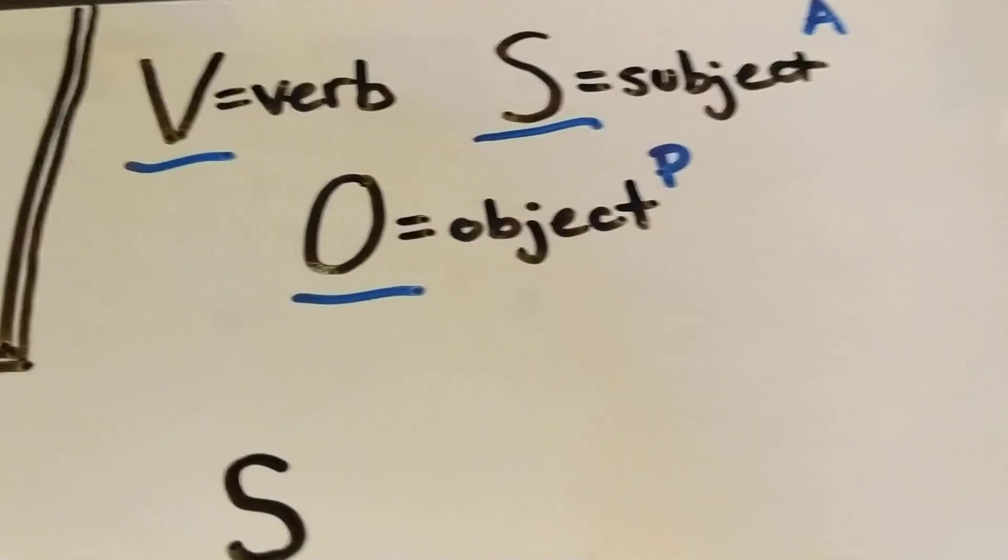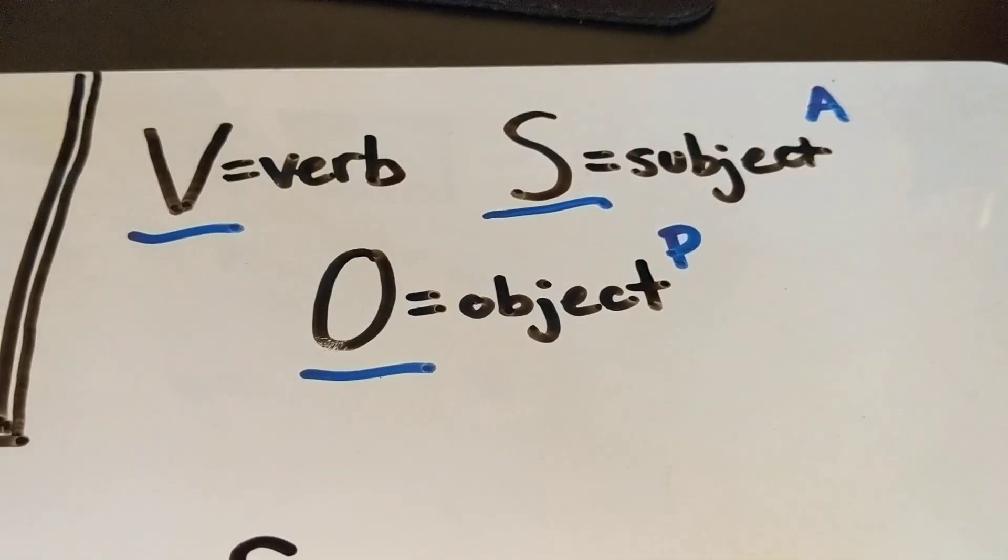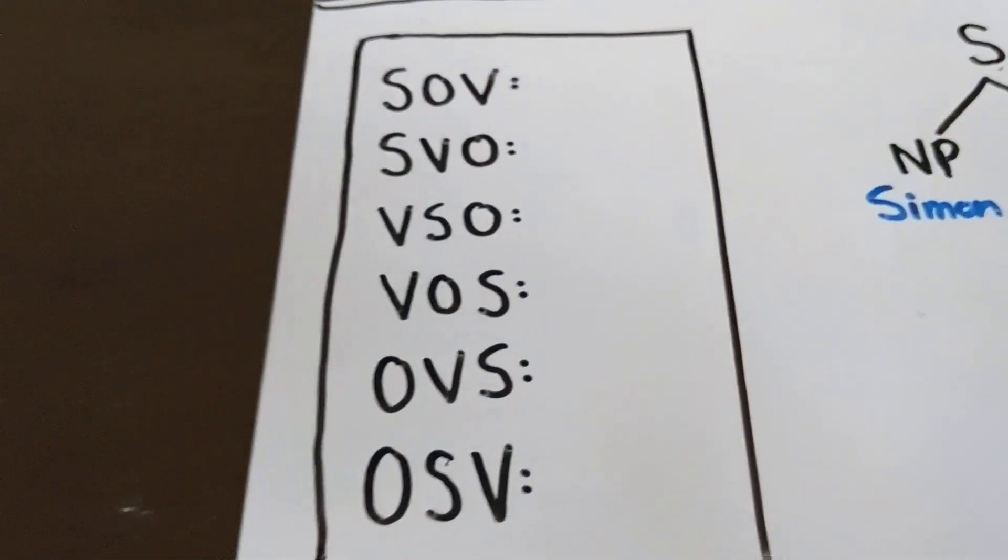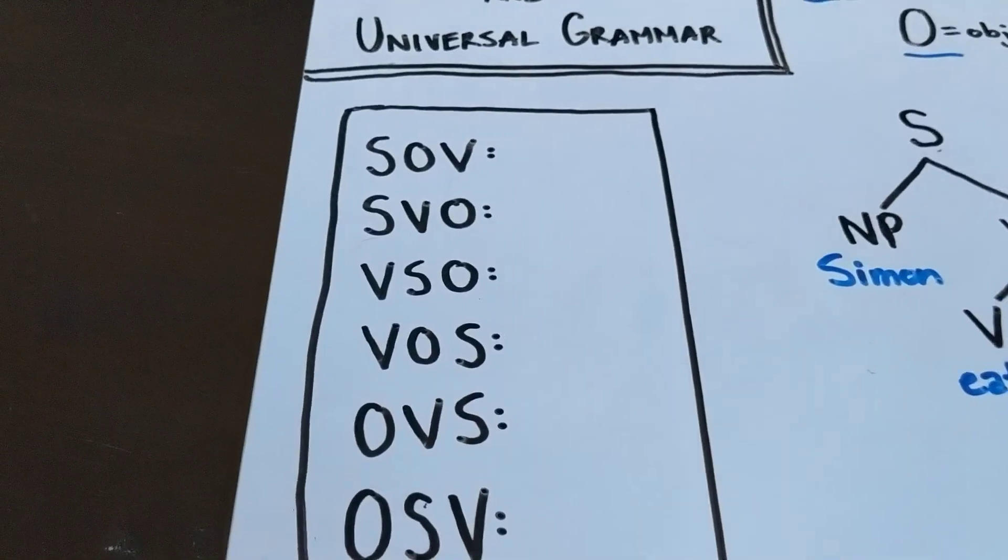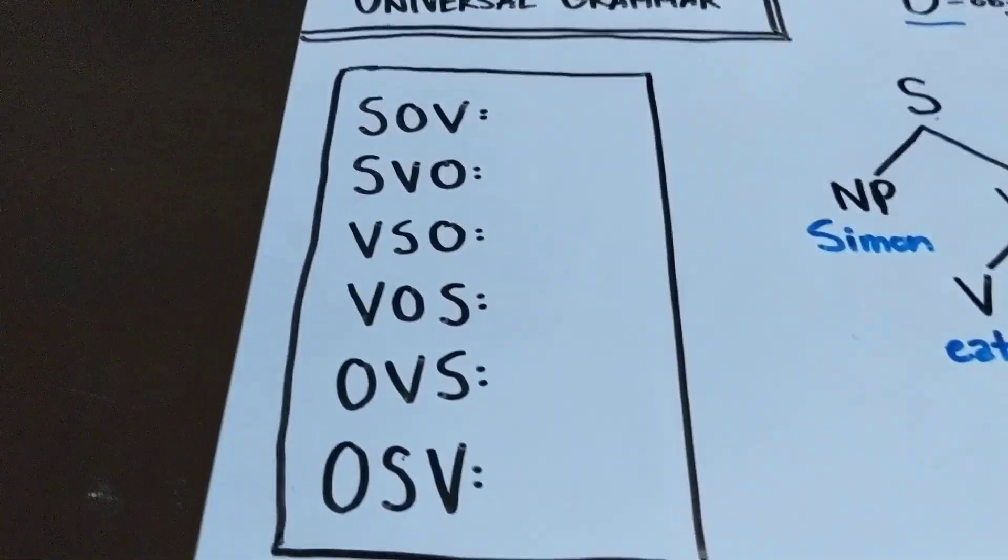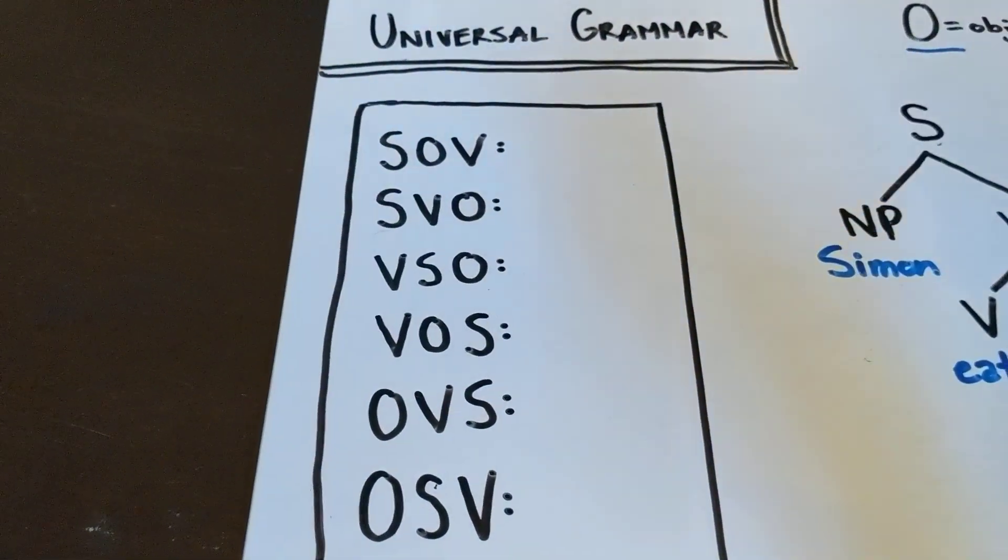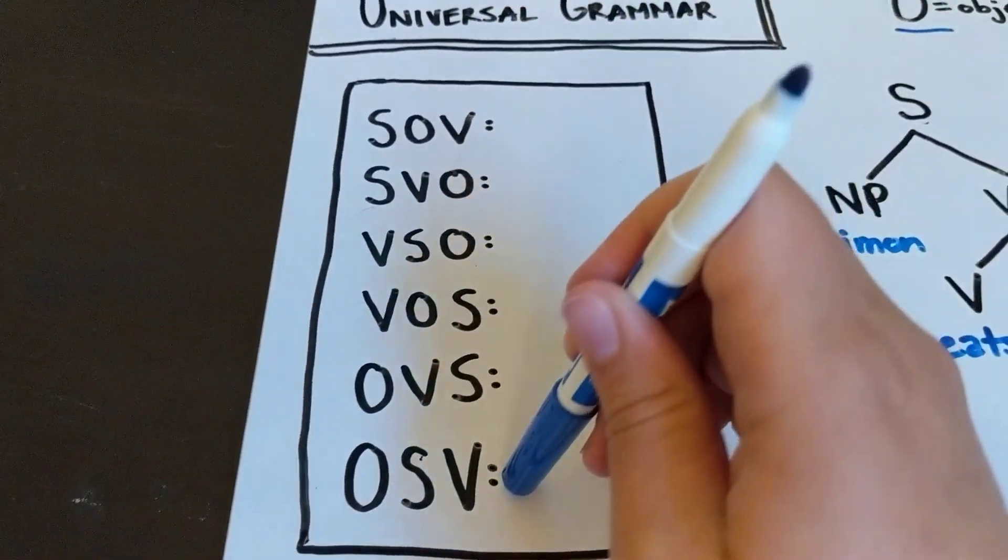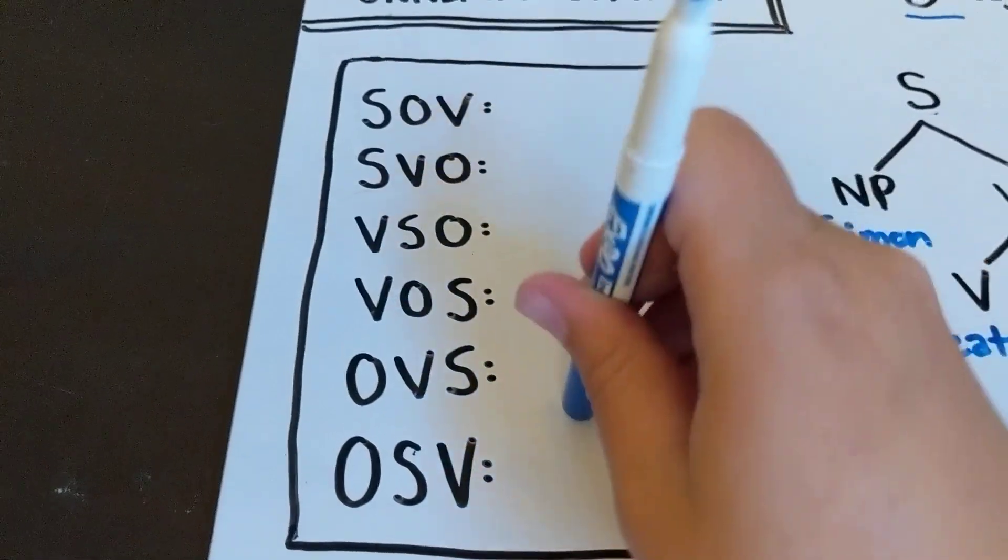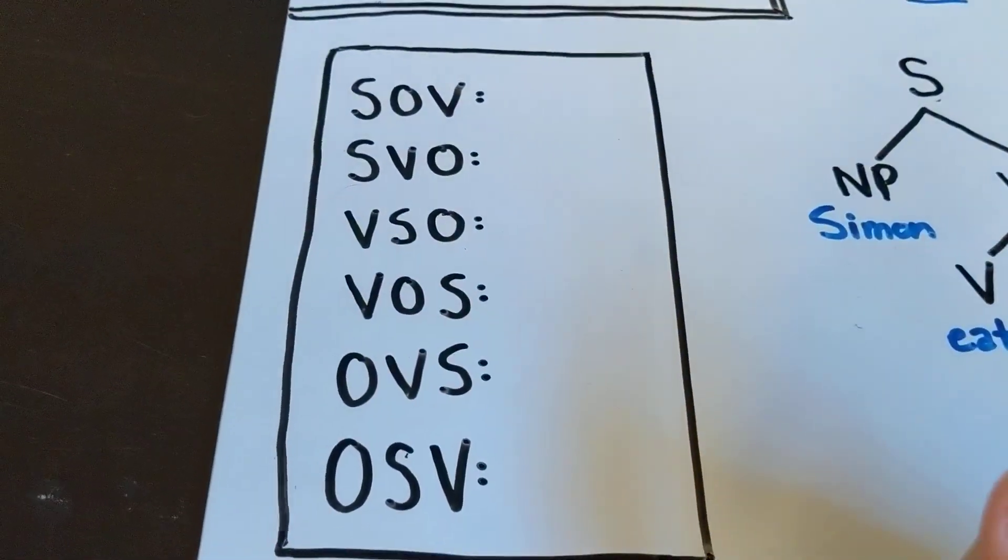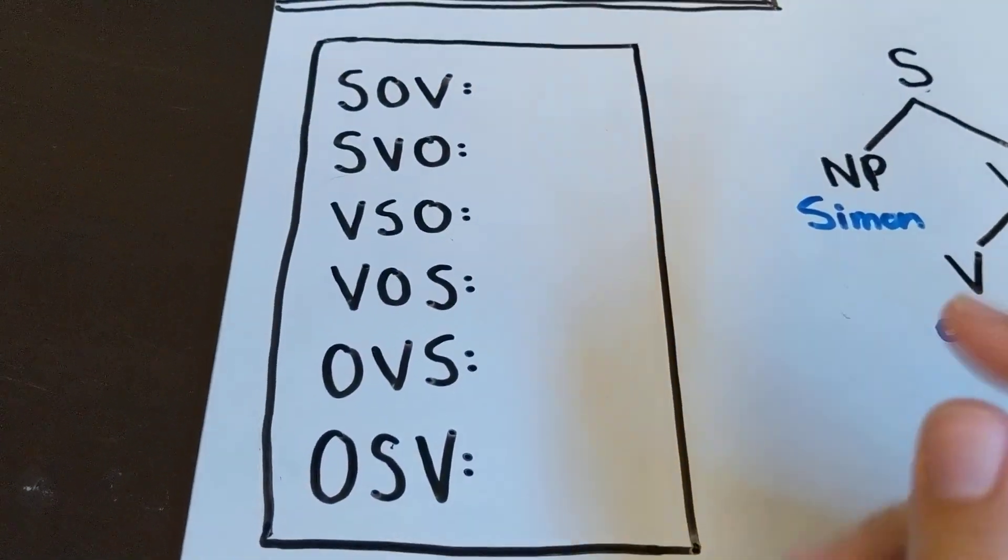So we have here three items which we can put into these orders. These are all the possible word orders for languages. And surprisingly, if there was nothing interesting underlying this, we would expect them to be all about 16% of the world's languages would be in each category. But this is not at all what we see.